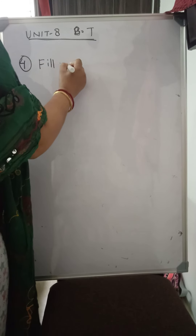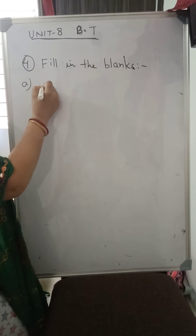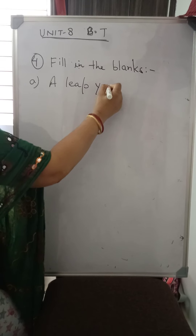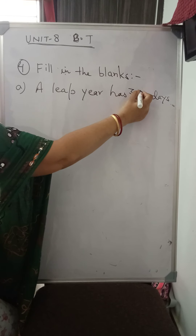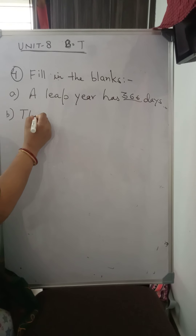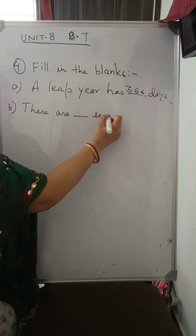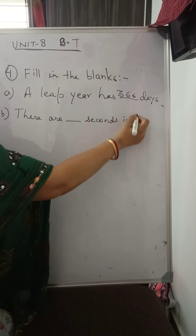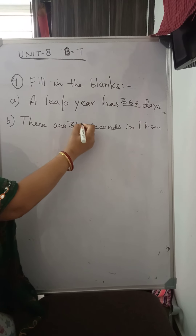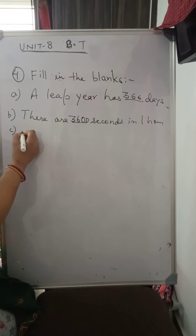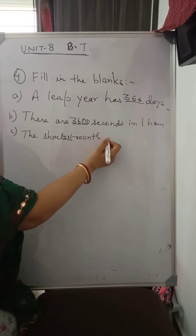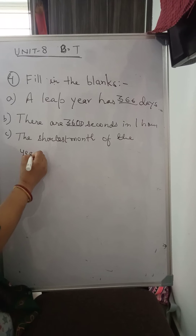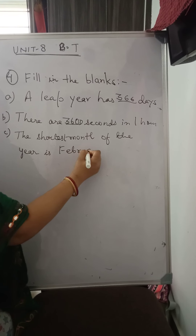Fill in the blanks. A: A leap year has dash days — three hundred sixty-six days. B: There are dash seconds in one hour — sixty into sixty, that is thirty-six hundred seconds.